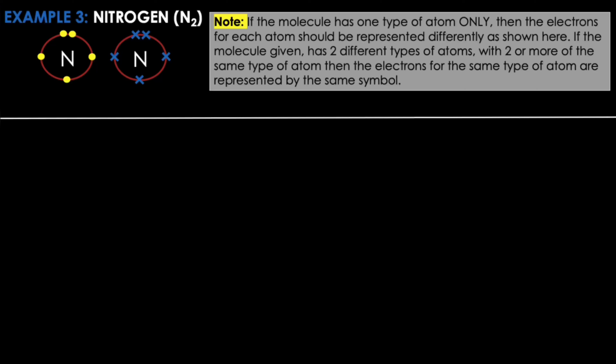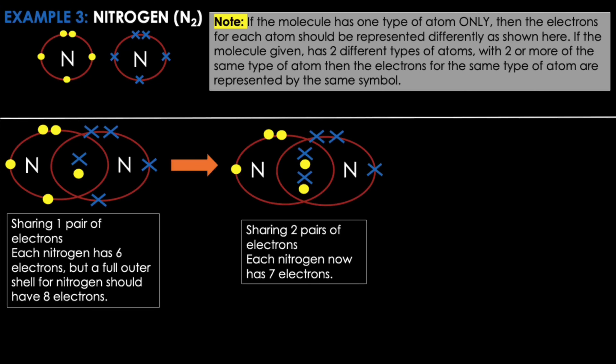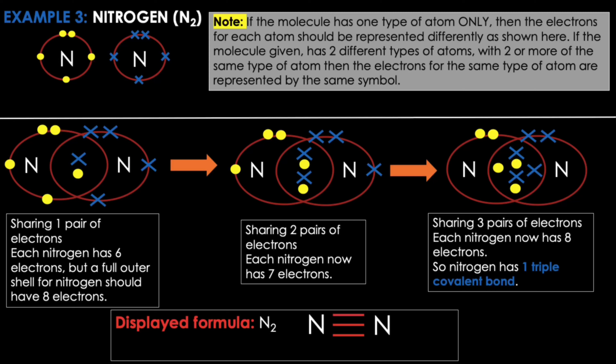If the molecule has two different types of atoms with two or more of the same type — for example NH3, which has nitrogen and hydrogen with three hydrogens — then the electrons for the same type of atom are represented by the same symbol. Going back to nitrogen: if the two nitrogen atoms share one pair of electrons, each has six electrons on its outer shell, but needs eight. Sharing two pairs still leaves seven electrons each. Sharing three pairs of electrons gives each nitrogen eight electrons on its outer shell, so no more sharing is required. This means nitrogen has one triple covalent bond.